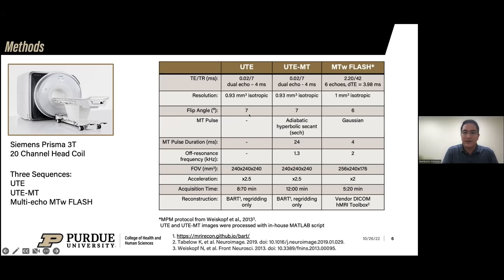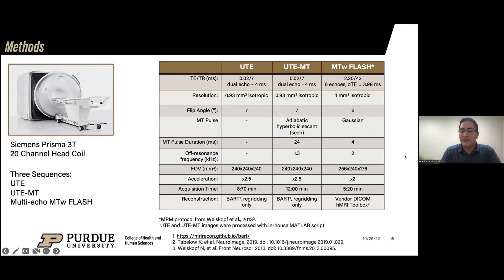Both sequences are roughly one millimeter isotropic, with the UTE at slightly higher resolution. They are both accelerated approximately twice, and 2.5x for the UTE-MT. The UTE has longer acquisition times. For reconstruction, we used the BART toolbox and simple regridding for the UTE. The UTE gives us a lot of data due to its many radial spokes and FID points, so we only use about 40% of the data with simple regridding and still get good results. For conventional imaging we used vendor DICOM images processed in the hMRI toolbox in MATLAB.